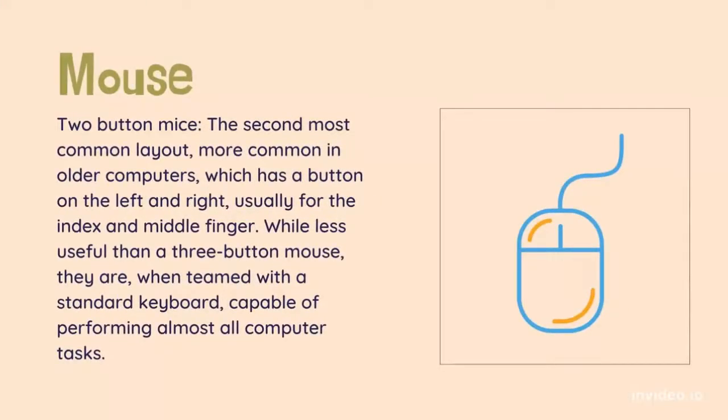Two button mice: the second most common layout, more common in older computers, which has a button on the left and right, usually for the index and middle finger. While less useful than a three button mouse, they are, when teamed with a standard keyboard, capable of performing almost all computer tasks.